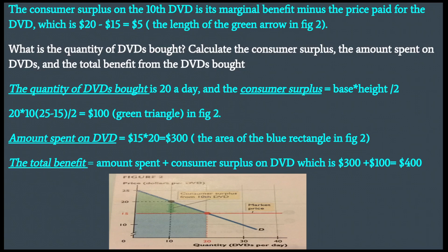What is the quantity of DVDs bought? The quantity of DVDs bought is 20 a day at a price of $15. The consumer surplus is base times height over 2 — the area of the triangle — where the base is 20 and the height is $10 (that is, $25 minus $15), giving $100. That is the green triangle in Figure 2.